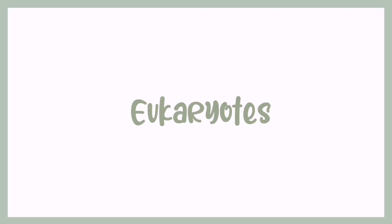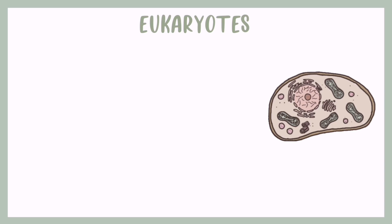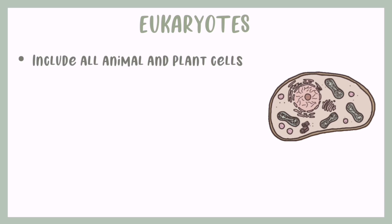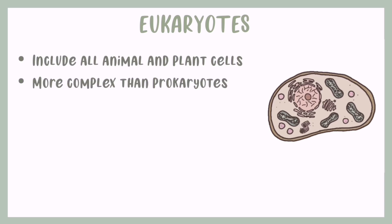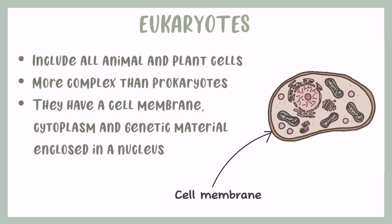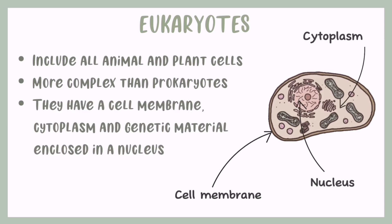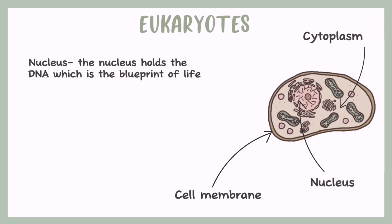So, what are eukaryotes? Eukaryotes include all animal and plant cells. They are more complex than prokaryotes, and they have a cell membrane, cytoplasm and genetic material enclosed in a nucleus. The nucleus holds DNA, which is the blueprint of life.